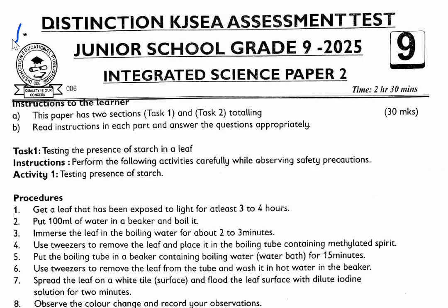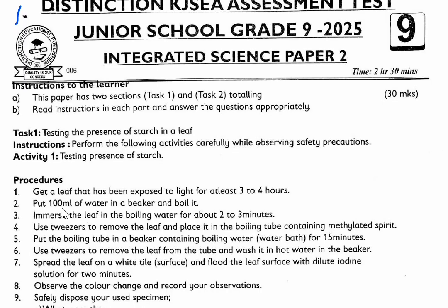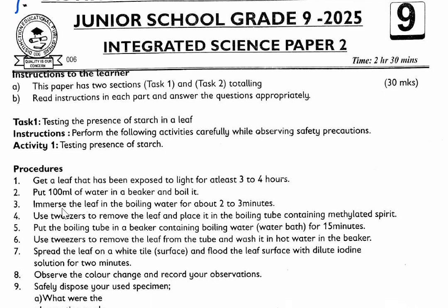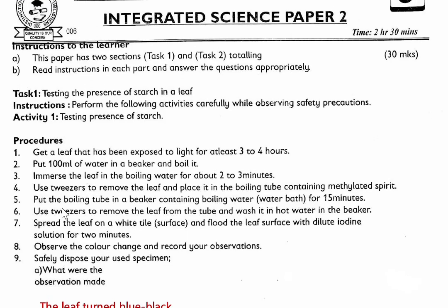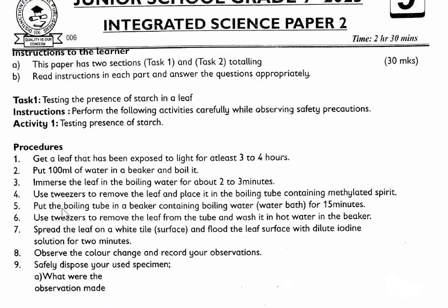Hello my good people and thank you for joining this lesson. When you are requested for this paper, that is paper 2 practical exam, here we have it. This is distinction 006; you're going to solve this paper fully, step by step. This paper has two sections, task 1 and task 2. We're going to start with the first task, which is testing the presence of starch in a leaf. This is grade 9 work.